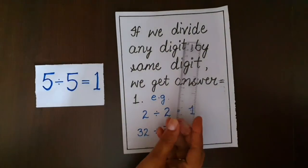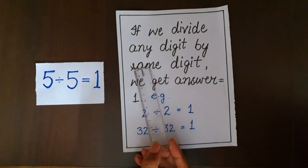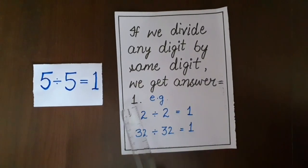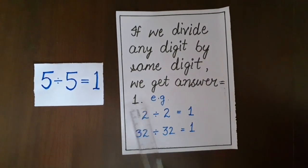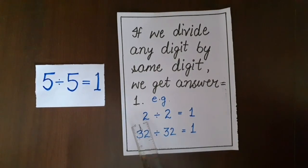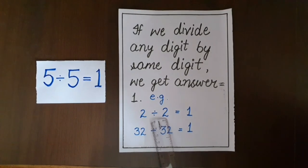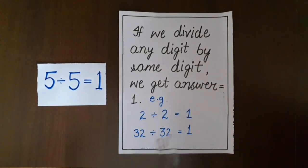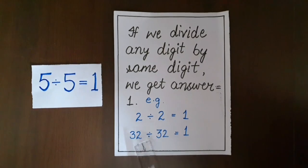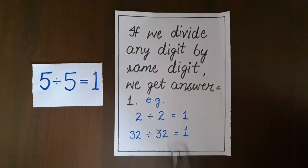We conclude that if we divide any digit by the same digit, we get an answer equal to one. Let's take more examples: two divided by two, we get one. Thirty-two divided by thirty-two, the answer is one.